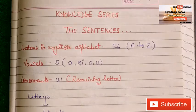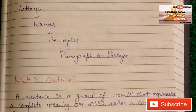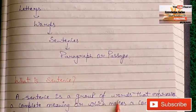We also know that words are formed by letters, sentences are formed by words, and paragraphs or passages are formed by sentences. Now let's talk about what a sentence is. A sentence is a group of words that expresses a complete meaning or which makes a complete sense.